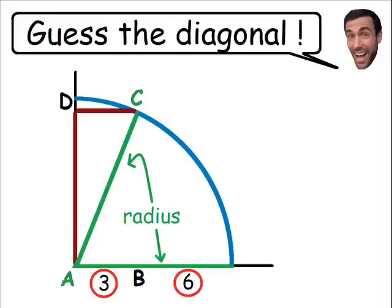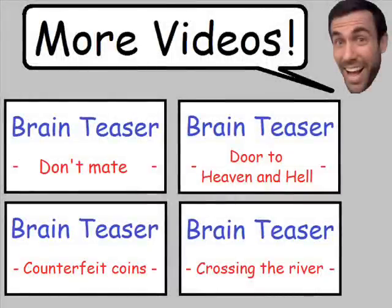Therefore, using the properties of a circle we know that the diagonal also must be equal to 9.